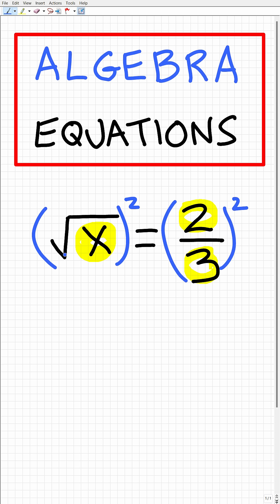So here we have the square root of x squared. Anytime you square a square root, the answer is going to be what's inside of this square root. So the square root of x squared is going to be equal to x.